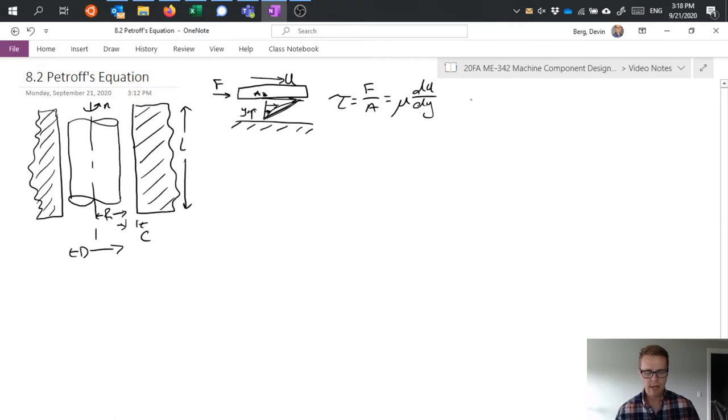If we do this straight line approximation we can say well du by dy, so change of velocity over change of y, would be just u over h.